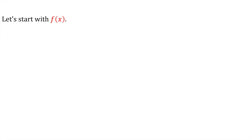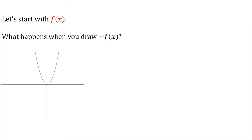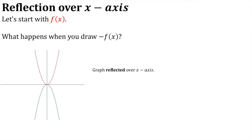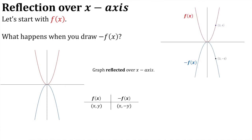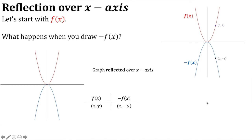Moving on — let's look at negative f of x, starting with f of x again. There is a line of symmetry along the x-axis: we have a reflection over the x-axis when we multiply f of x by negative 1. All y-ordinates in f of x become negative y in the graph of −f(x). For a concrete example: the point (2, 4) becomes (2, −4), because we've multiplied the y-ordinate by negative 1.